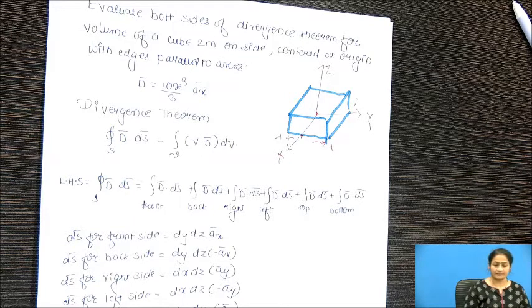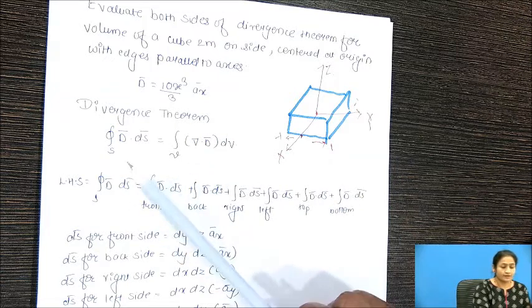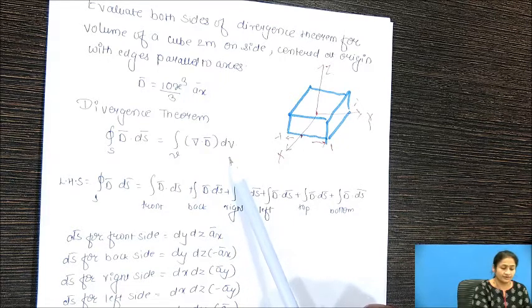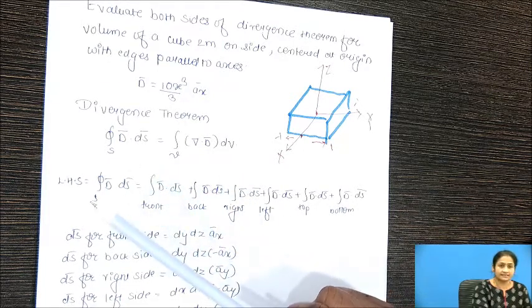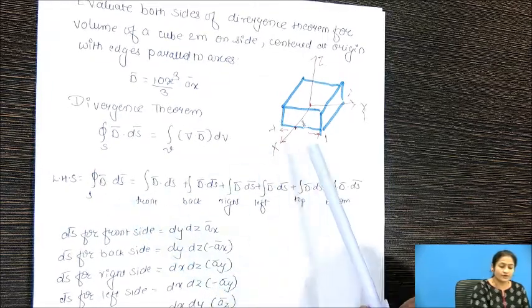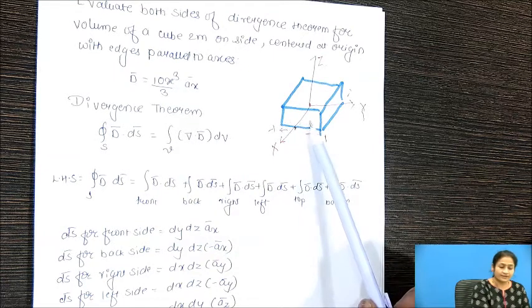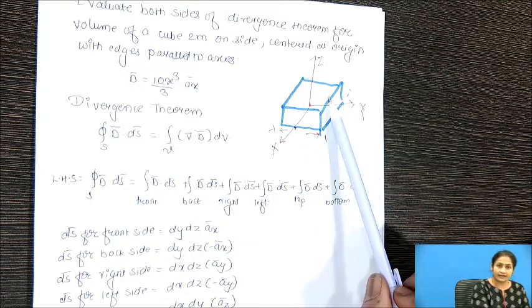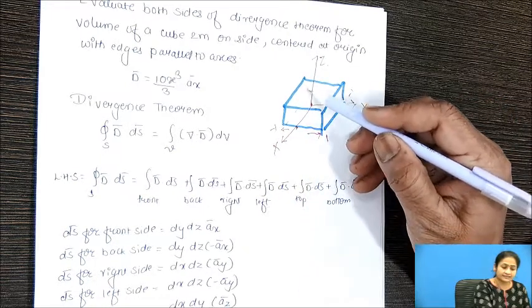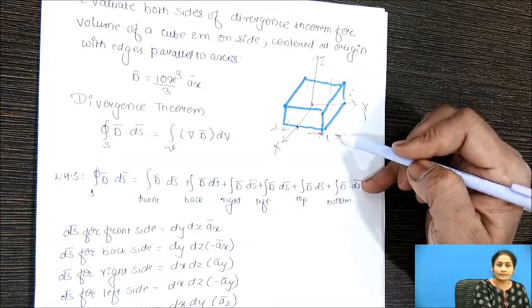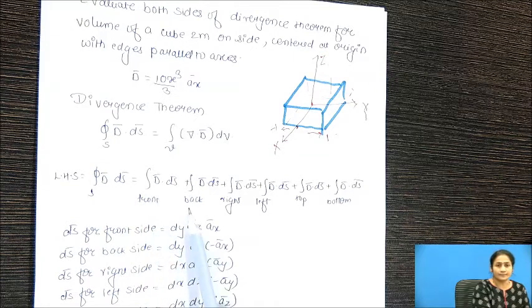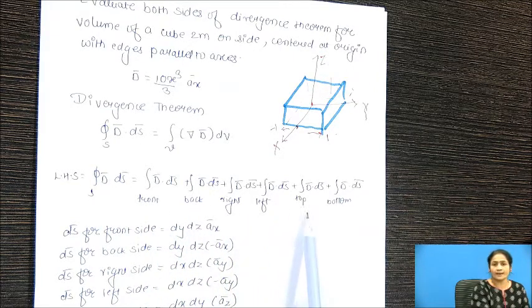From the theorem, the closed integral of D · ds is equal to the volume integral of del dot D-bar dv. We will consider the LHS side. The closed integral will include contributions from the front, back, left, right, top, and bottom surfaces of the cube.